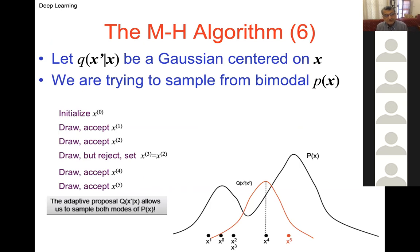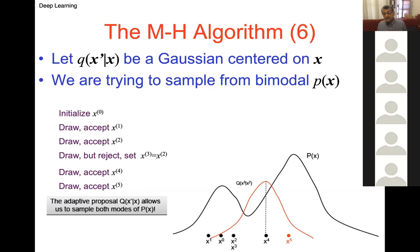The idea is: start with a distribution, generate a sample, and if it is good, accept it. Draw from the conditional distribution given the current sample and so on, accepting or rejecting based on the importance weight ratio. We keep running along and generating samples, wanting to represent the entire distribution — not get stuck giving uninteresting samples.